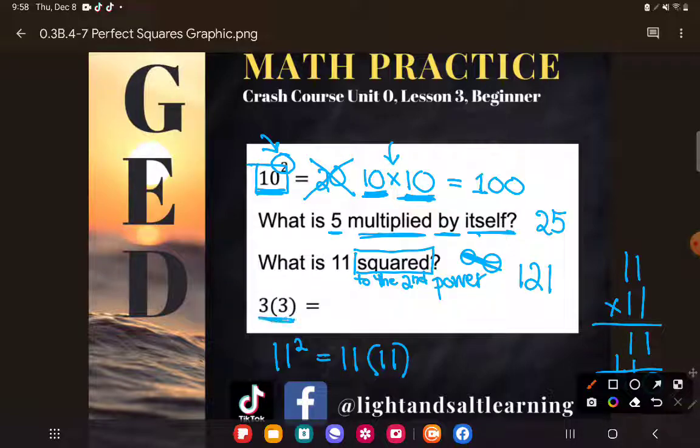And now, again, another way to say the same thing. I could write three to the second power. I could say three squared. I could say what is three multiplied by itself, or I could just write that out in what we call expanded or factored form as repeated multiplication. So three squared or three times three is the same as nine.